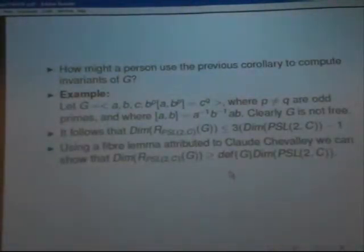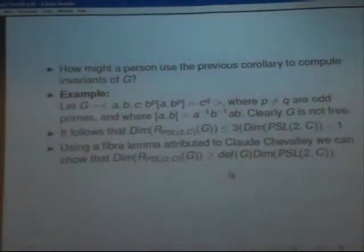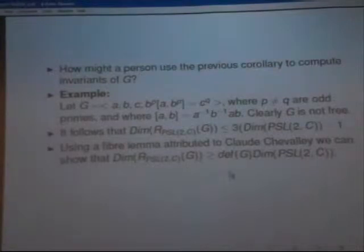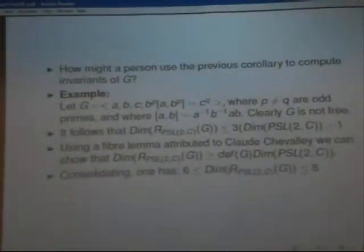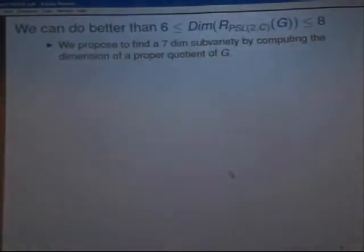Using a fiber lemma attributed to Claude Chevalley, we can show that the dimension of the space representation of G of PSL(2, C) is actually greater or equal to the deficiency of G times the dimension of PSL(2, C), which we know is three, and we know that too well. What is D? The deficiency. The deficiency of a presentation is the number of generators minus the number of relations. So we have here three generators and we have one relation. So the deficiency of this group is going to be two. So consolidating all this stuff, we have that six is smaller or equal to the dimension of the space representation of G, which is PSL(2, C), and is smaller or equal to eight. So that doesn't look very impressive. It's good, but it's not that very impressive.